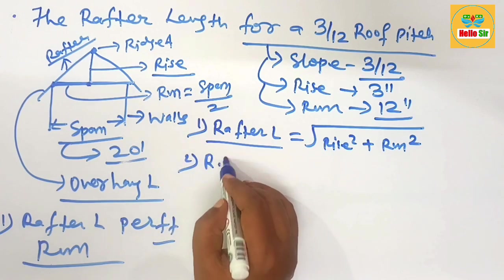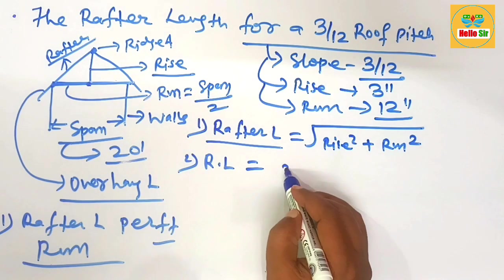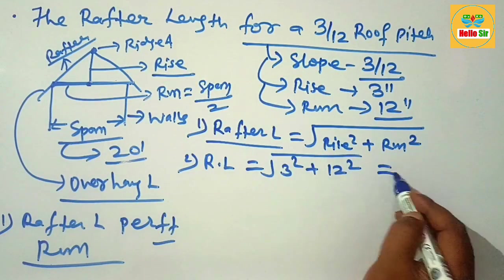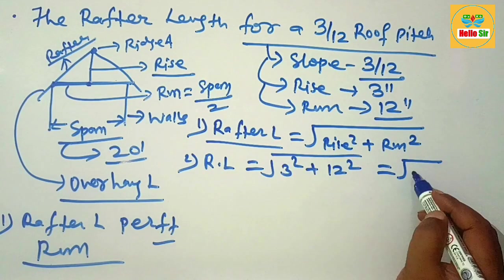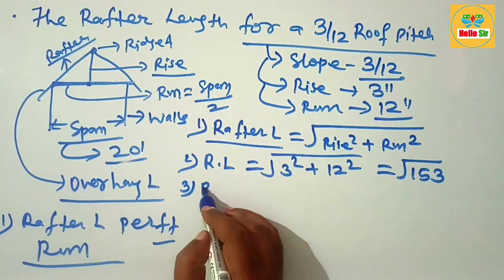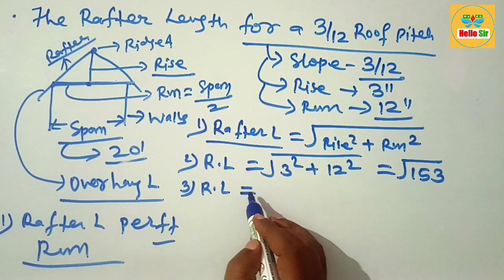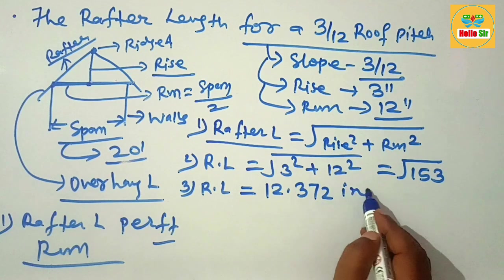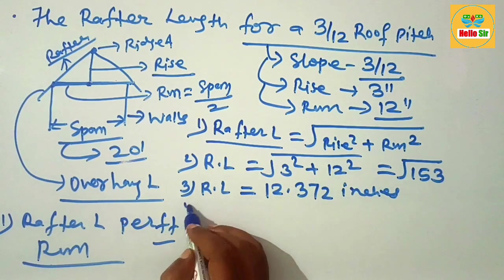Putting in all the values, the rafter length equals the square root of 3 squared plus 12 squared, which is the square root of 153. This gives a rafter length of about 12.372 inches.